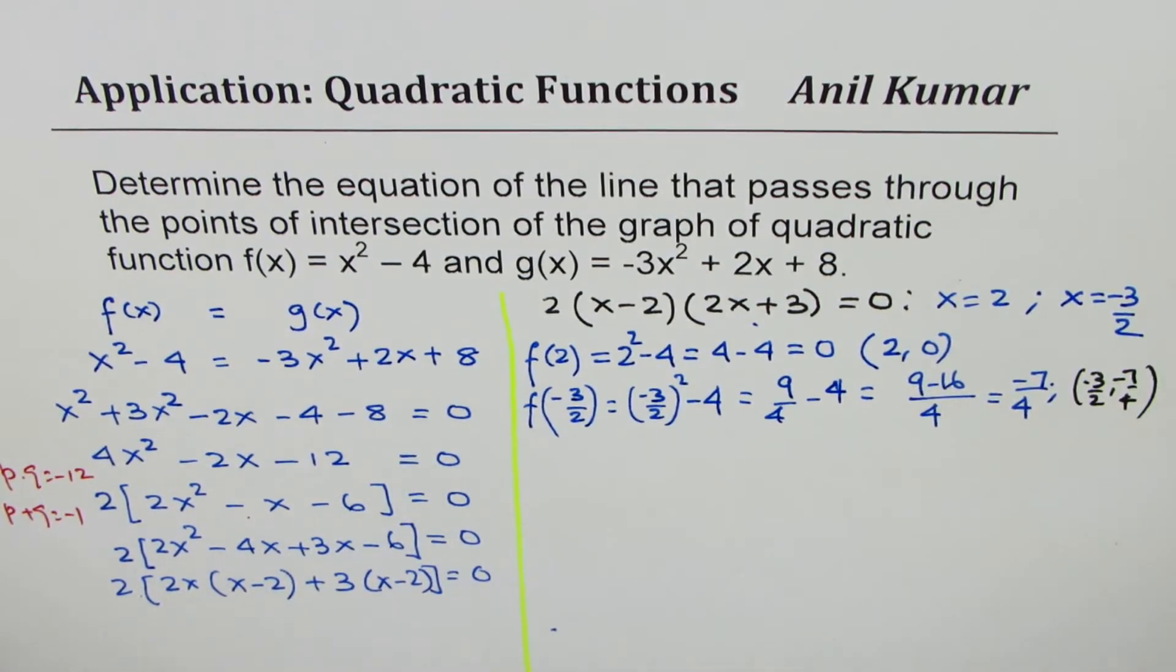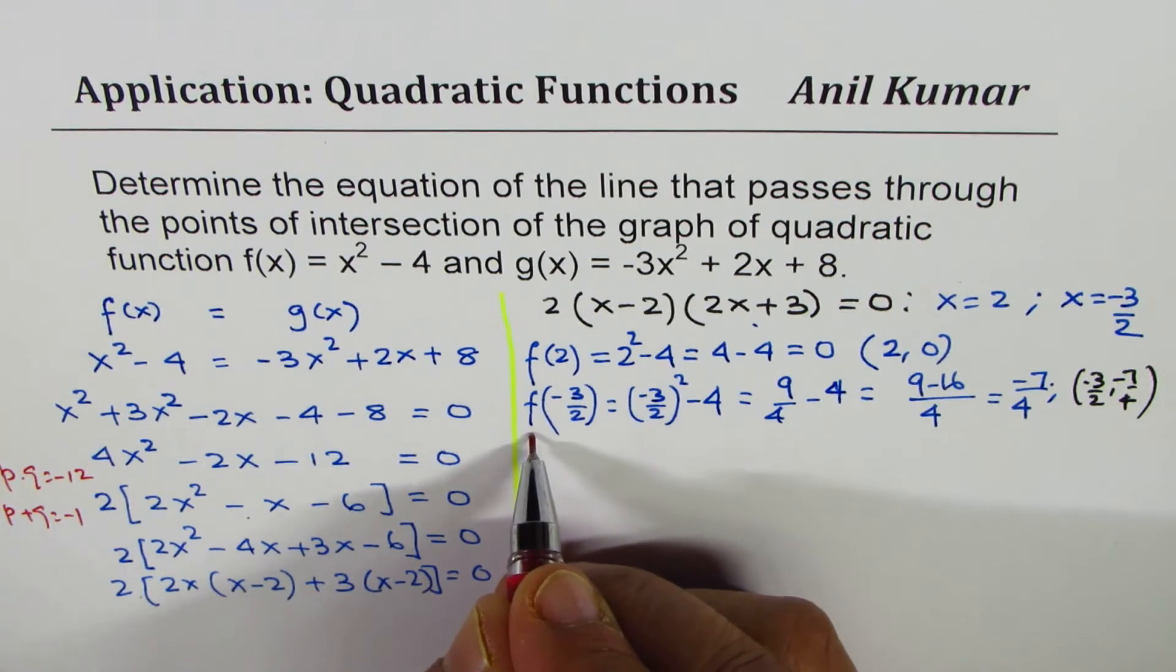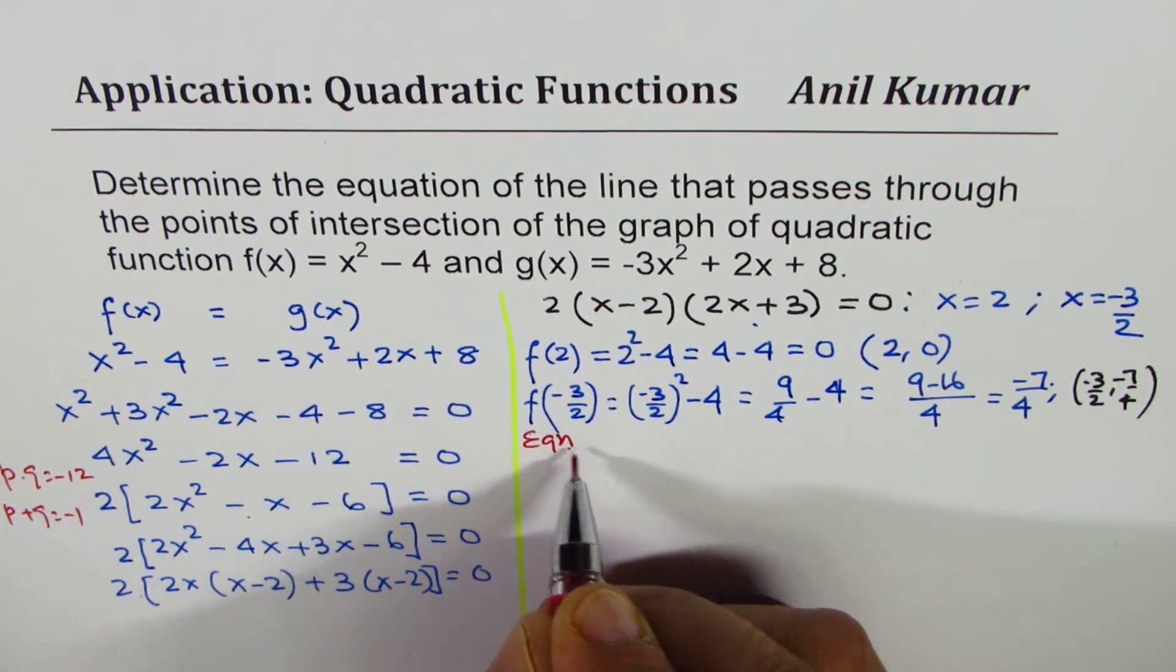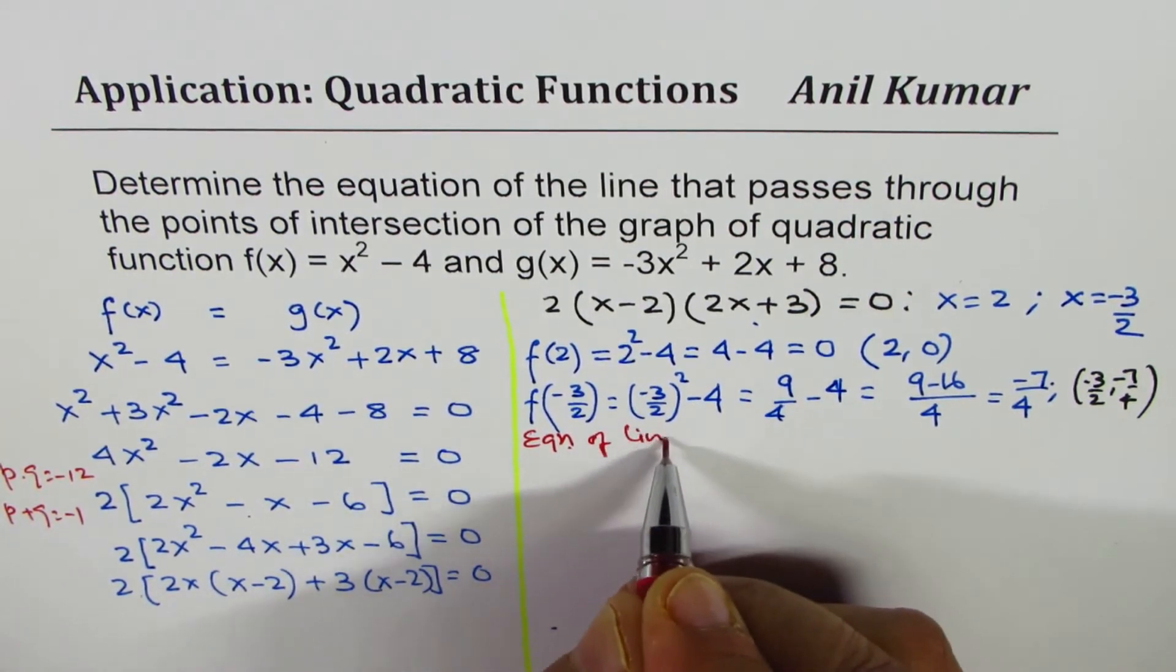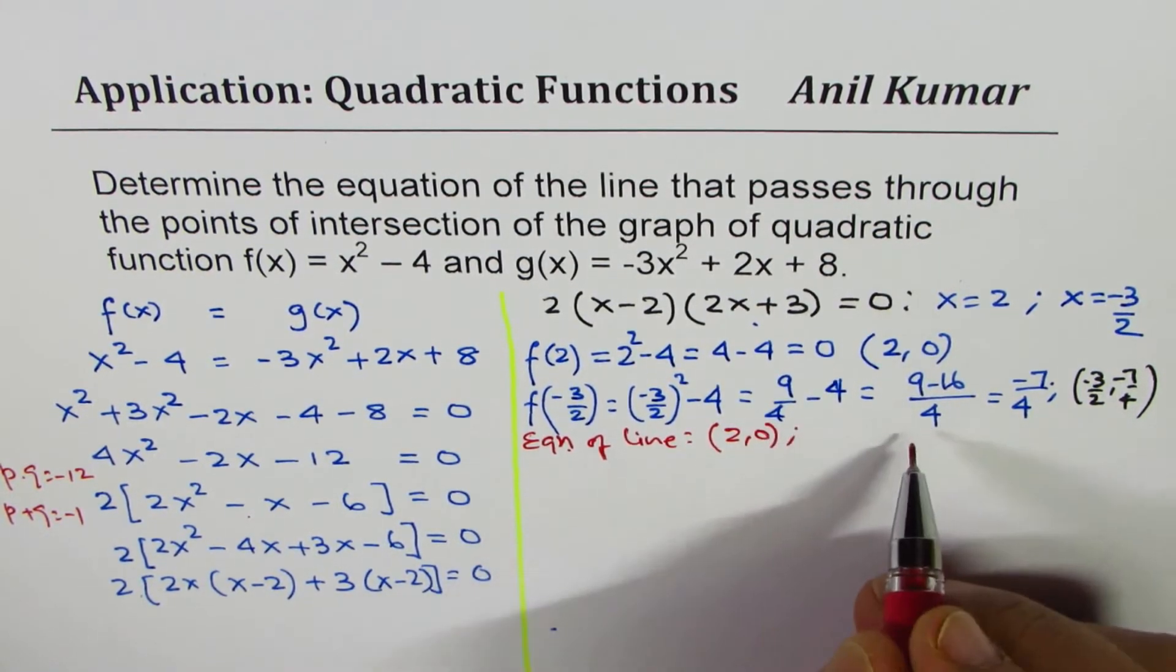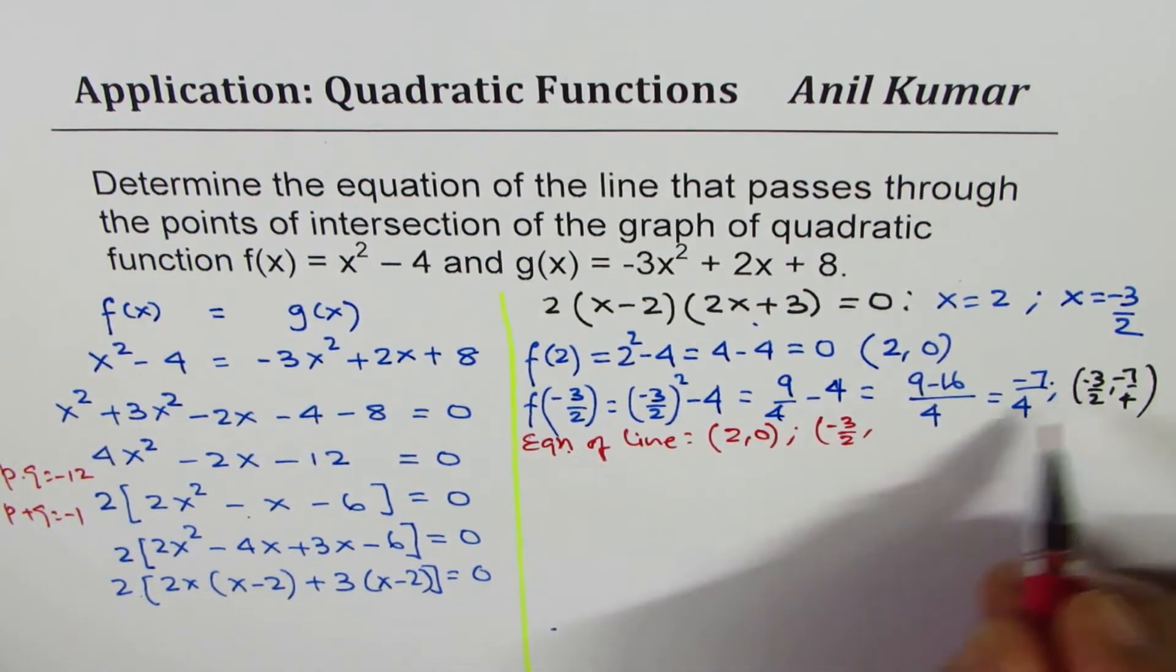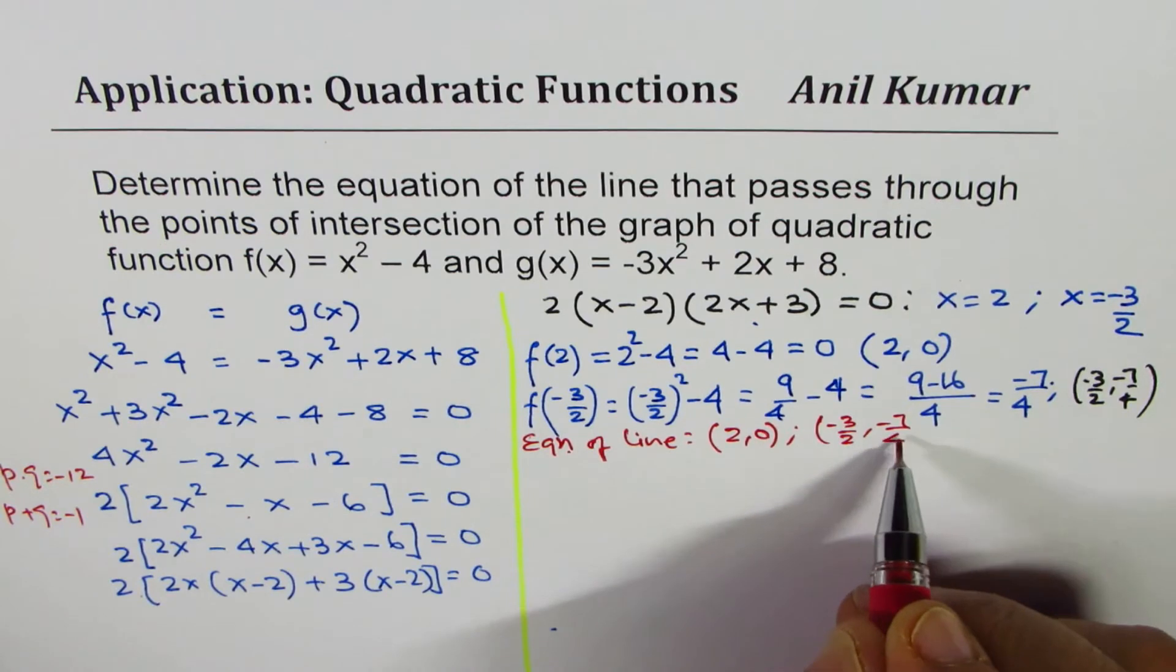Now we have to find the equation of the line through the two points of intersection. Let's find the equation of the line. We know the two points are (2, 0) and (-3/2, -7/4).